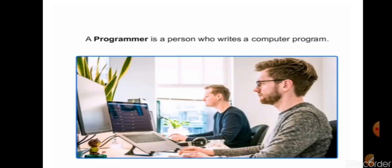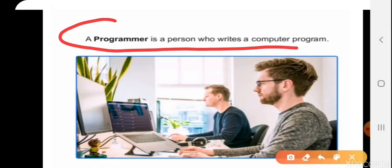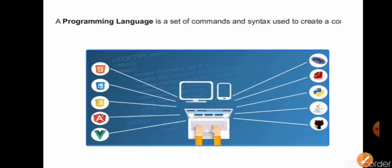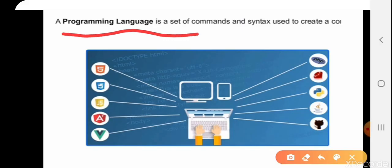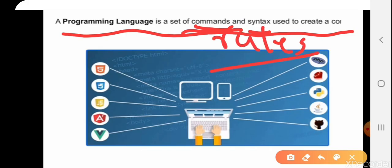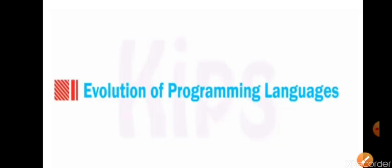Who is a computer programmer? The person who writes a computer program is called a computer programmer — anybody who creates a program. What is a programming language? A programming language is a set of commands and syntax used to create a computer program. Syntax means the rules of that particular language. In the next module, we will take a brief look at the evolution of programming languages and how they evolved.